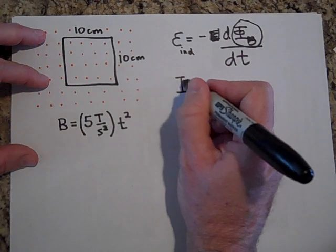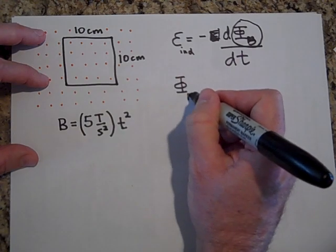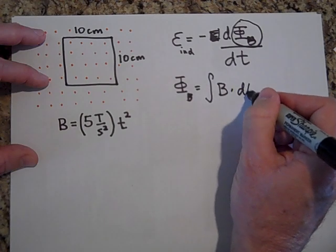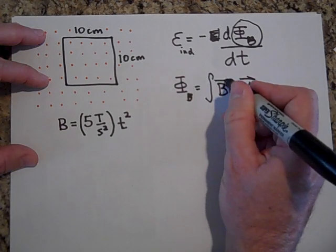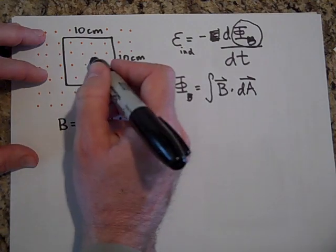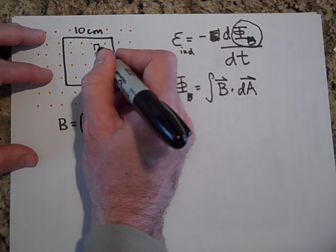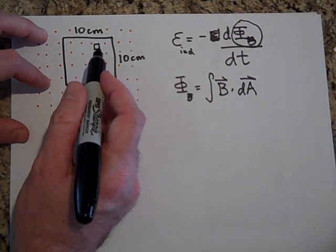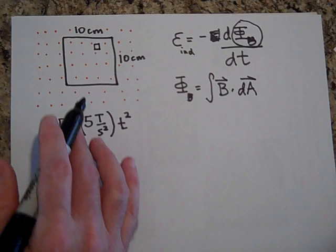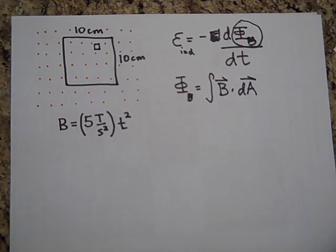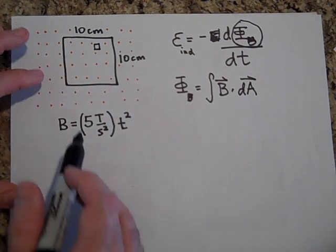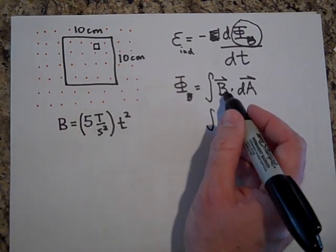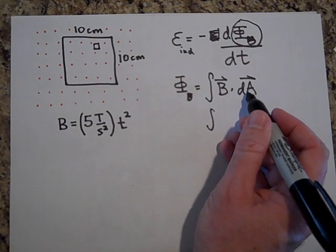So the magnetic flux is going to be equal to the integral of B dot dA. Now, the dAs, let me draw you one dA for this hoop. It might look like this. Now, dAs are really small, but I'm going to make it big enough so you can see. And let's say that's coming out at us. So you see B and dA are always in the same direction. So I can get rid of the dot product.